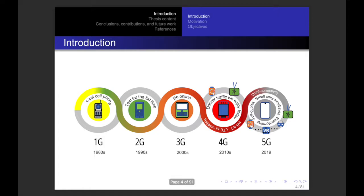Let's start with the first generation of cellular networks in the 1980s. At that time, we had our first bulky cell phone. The second generation in the 1990s, we were able to text for the first time. The third generation in the 2000s, we went online. The fourth generation of cellular networks in the 2010s, operators delivered traffic we enjoy today, and new technologies such as FeMBMS, LTE-M, and narrowband internet of things were introduced.